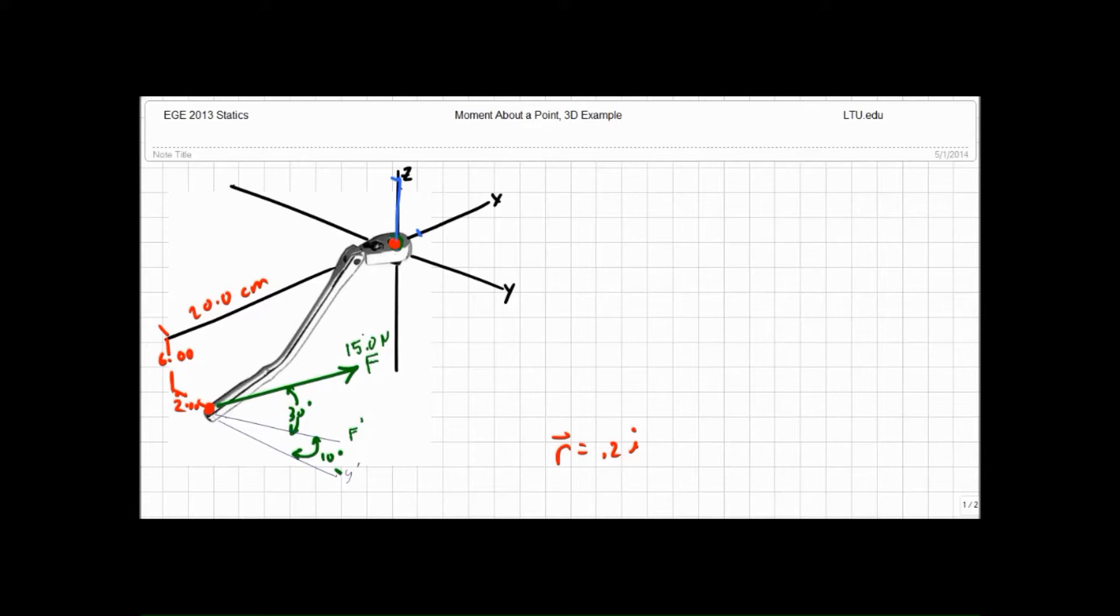I have 0.02 j and in the k direction, I have minus 0.06 k and those are all vectors.